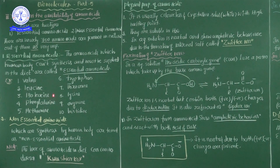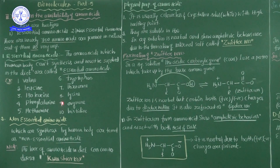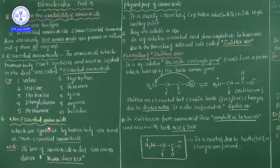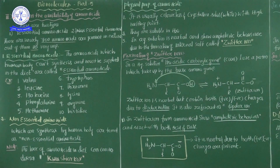To summarize the third classification: based on availability, there are two types. Number one — essential amino acids, which cannot be synthesized by the human body and must be obtained from food material. Number two — non-essential amino acids, which are already synthesized by the human body from birth. If a person is deficient in amino acids from the diet, they will be affected by Kwashiorkor disease. This is the third classification of amino acids based on availability.